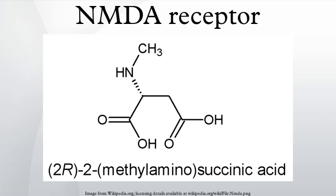Pb2+ is a potent NMDA receptor antagonist. Presynaptic deficits resulting from Pb2+ exposure during synaptogenesis are mediated by disruption of NMDA receptor-dependent BDNF signaling. It has been demonstrated that polyamines do not directly activate NMDA receptors, but instead act to potentiate or inhibit glutamate-mediated responses. Aminoglycosides have been shown to have a similar effect to polyamines, and this may explain their neurotoxic effect.